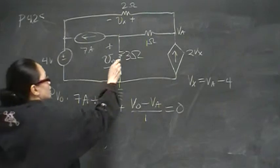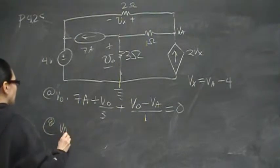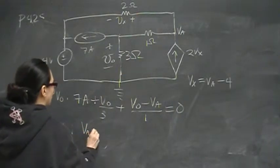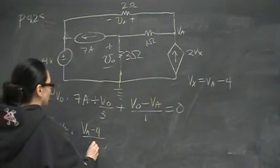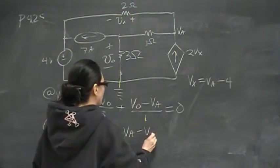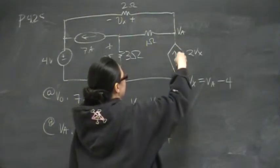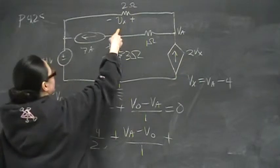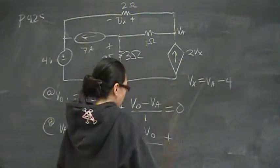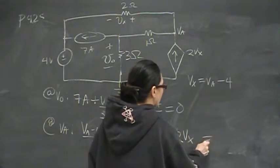The second node equation is at Va. That equation is Va minus 4 over 2, and then this is going to be Va minus Vout over 1. And then this is a dependent current source, and its value is controlled by that resistor. So this is going into the node, which means it's minus. So minus 2Vx. That's going to be equal to 0.